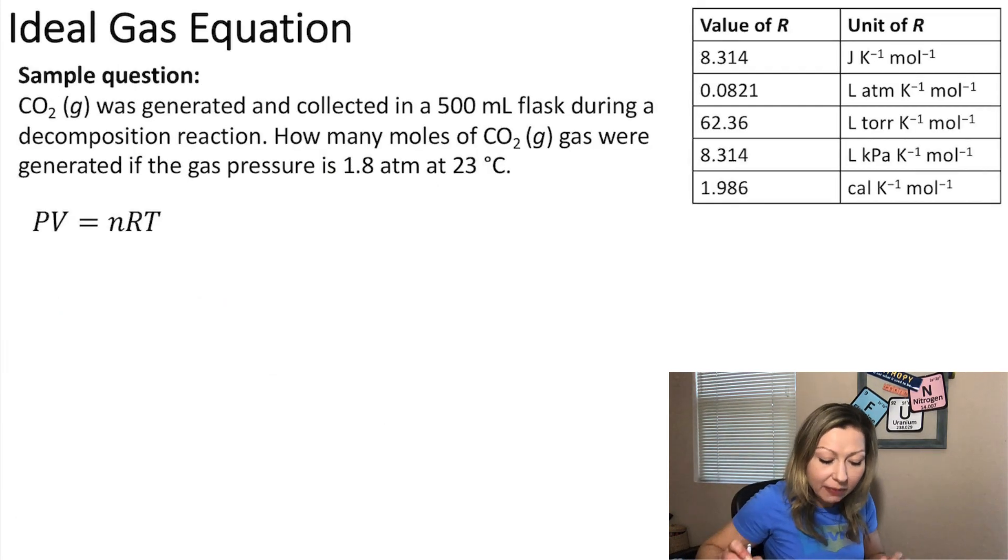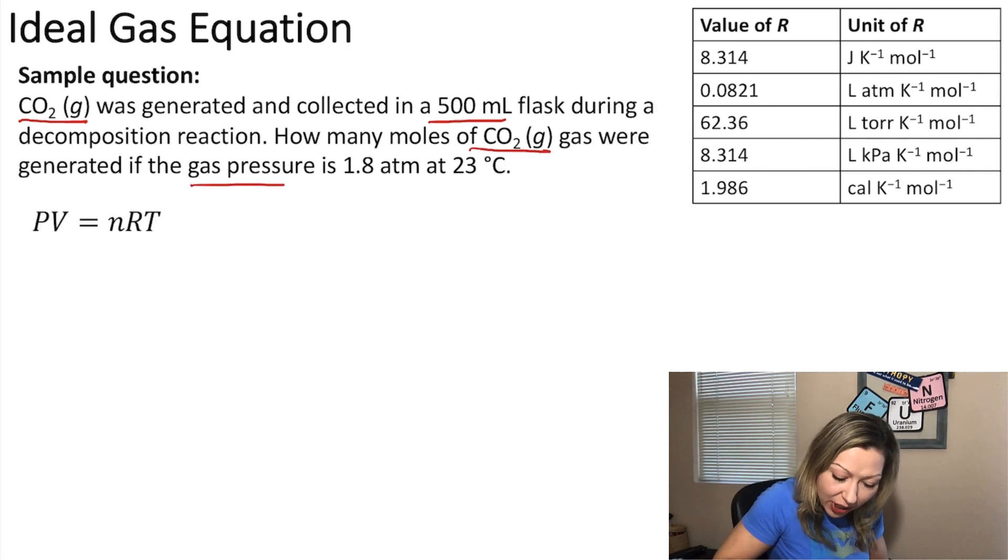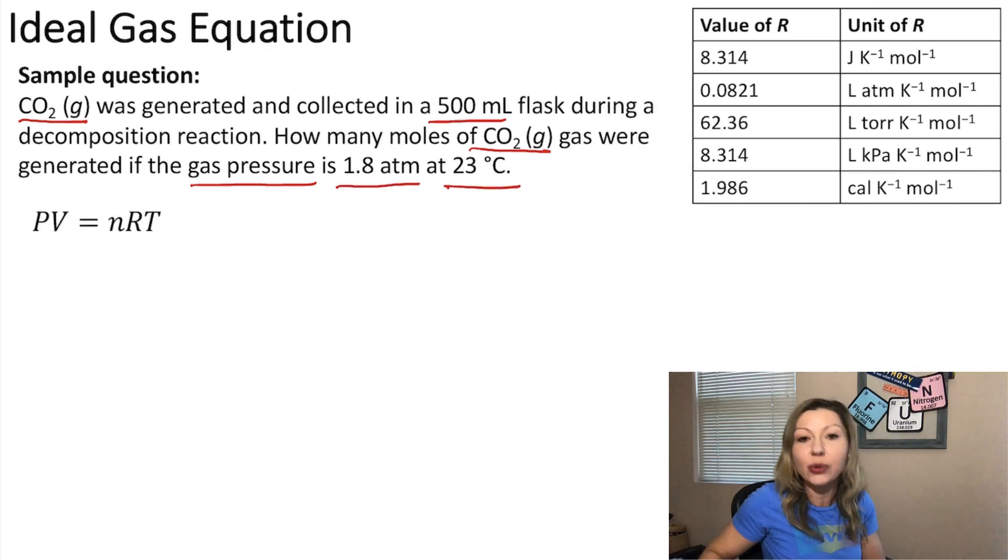So here we have carbon dioxide gas which was generated and collected in a 500 milliliter flask during a decomposition reaction. The question is how many moles of carbon dioxide gas were generated if the gas pressure is 1.8 atm at 23 degrees Celsius?